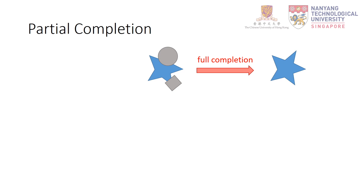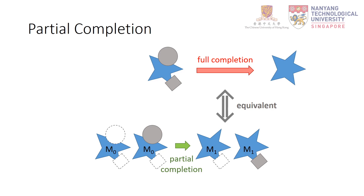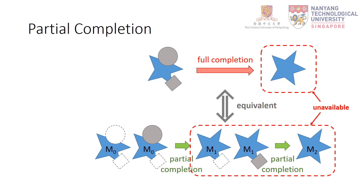Here we introduce partial completion. We show that full completion is equivalent to a sequence of partial completions. We denote the modal mask as M0. At first, we consider one occluder, the grey circle, and perform partial completion to obtain M1. Next, we consider the other occluder, the grey rectangle, and perform partial completion again to obtain M2. By considering the occluders one by one, we break down full completion into a sequence of partial completions. However, we still have no ground truth to train the partial completion process — M1 and M2 are still unavailable.